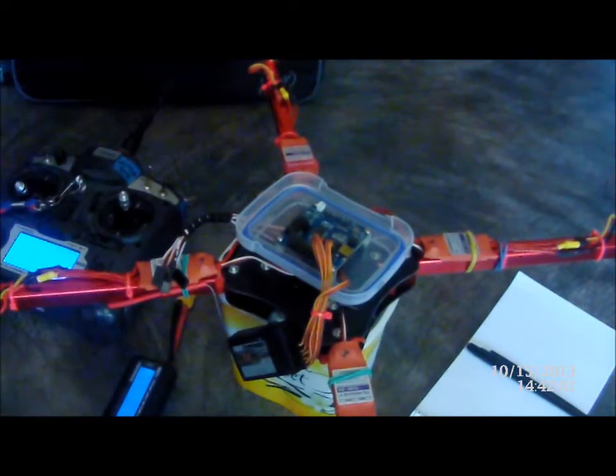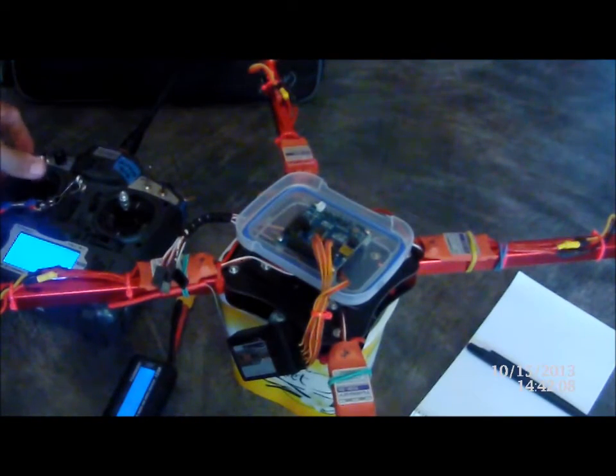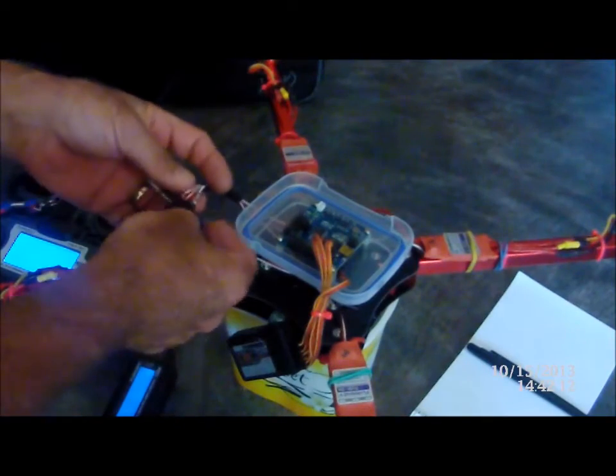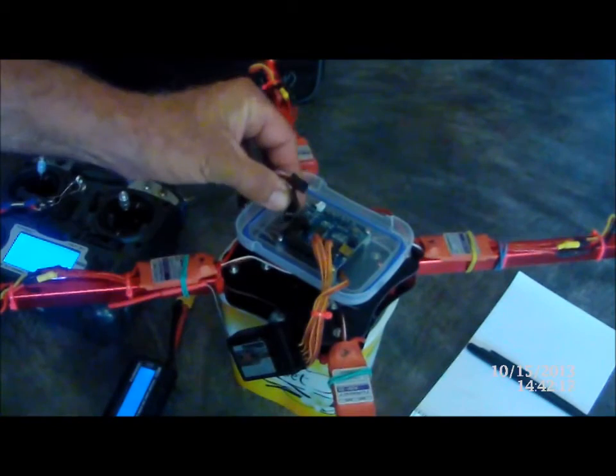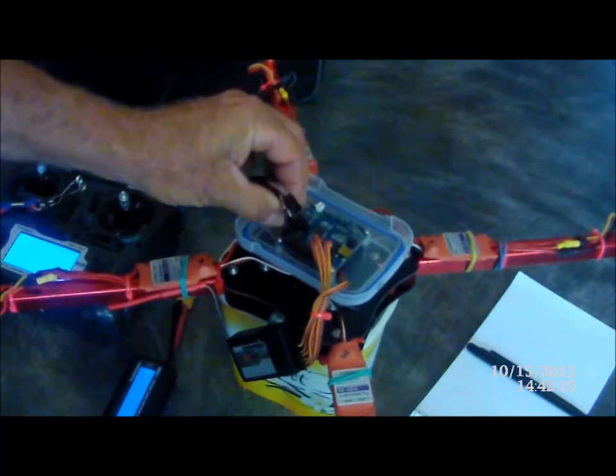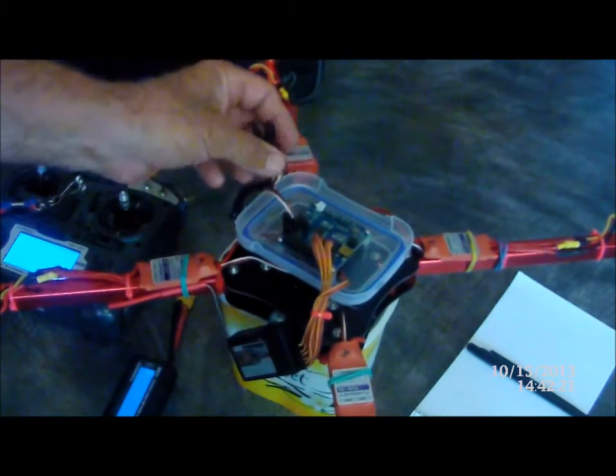So what we do, we're in the ESC calibration mode, which is we've fixed our setup. So our throttle is up full on our little unit there. We get ESC number one. Now signal is on the inside. So we'll take this guy here. We put one on there.